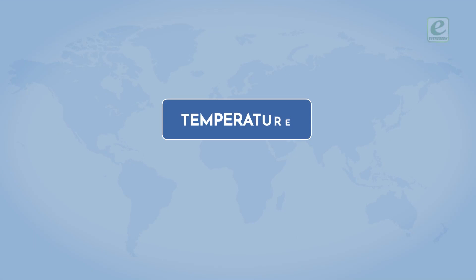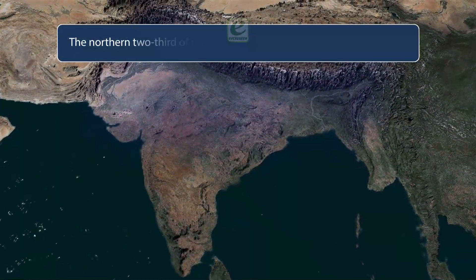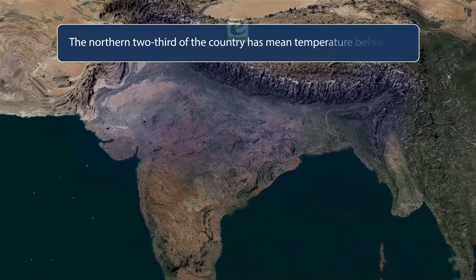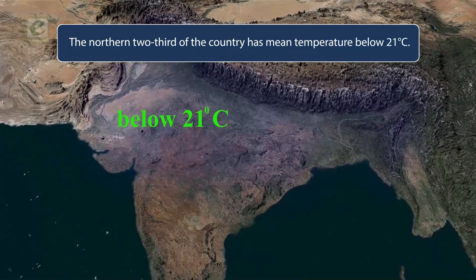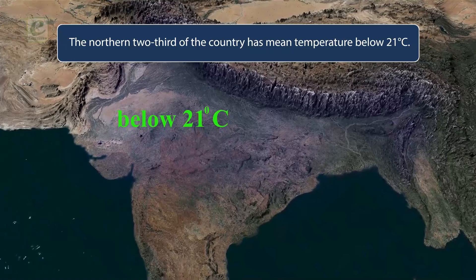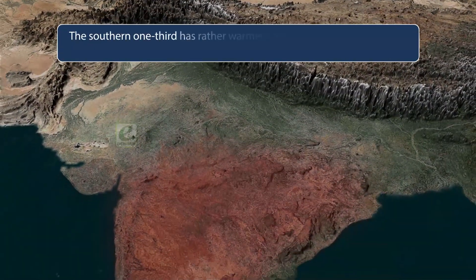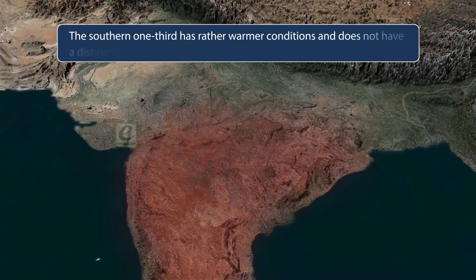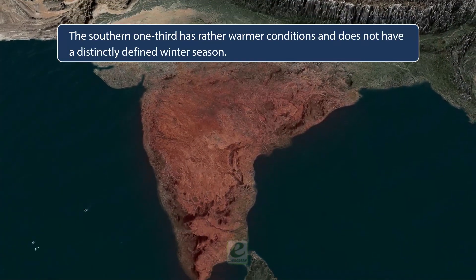Temperature: The northern two-third of the country has mean temperature below 21 degrees Celsius. The southern one-third has rather warmer conditions and does not have a distinctly defined winter season.